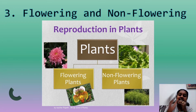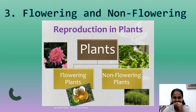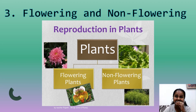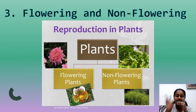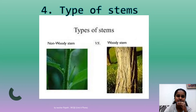The next characteristic is flowering and non-flowering. Some plants have flowers and some do not. For example, hibiscus is a flowering plant because it has a flower. Grass is a non-flowering plant because you cannot see any flower on it. So you can classify plants into flowering plants and non-flowering plants.